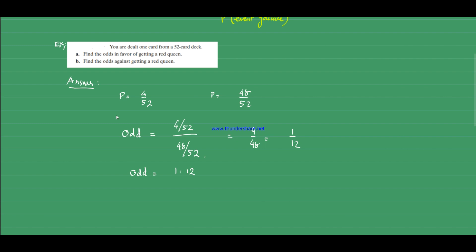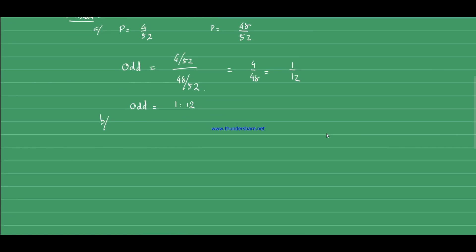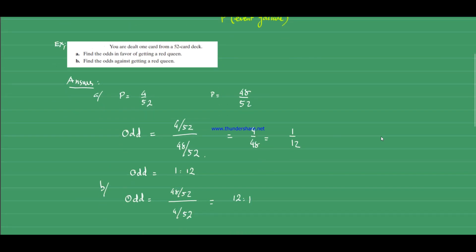For part b, finding the odds against getting a red queen: you simply flip the ratio. Instead of 1 to 12, the odds against will be 12 to 1.